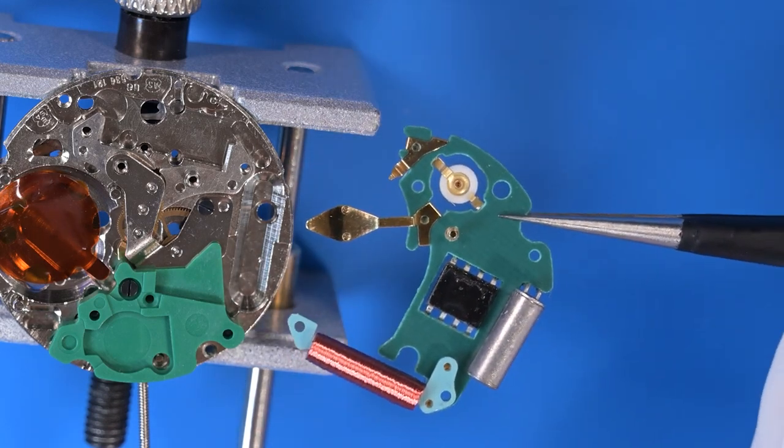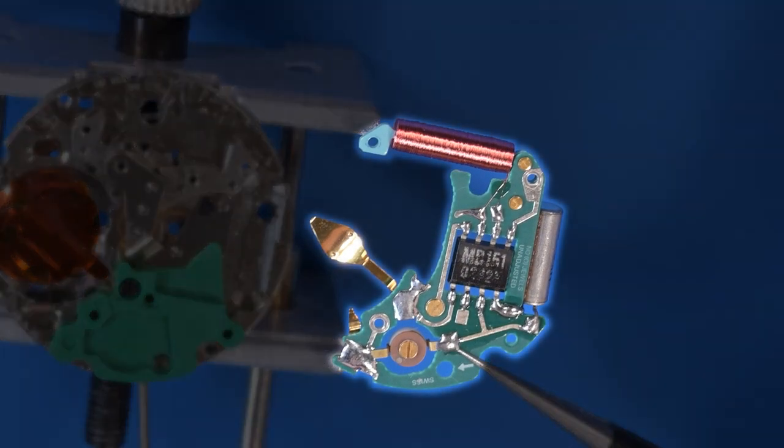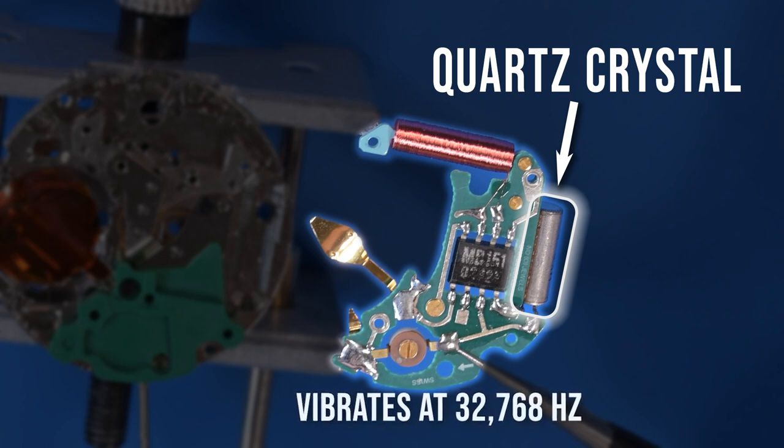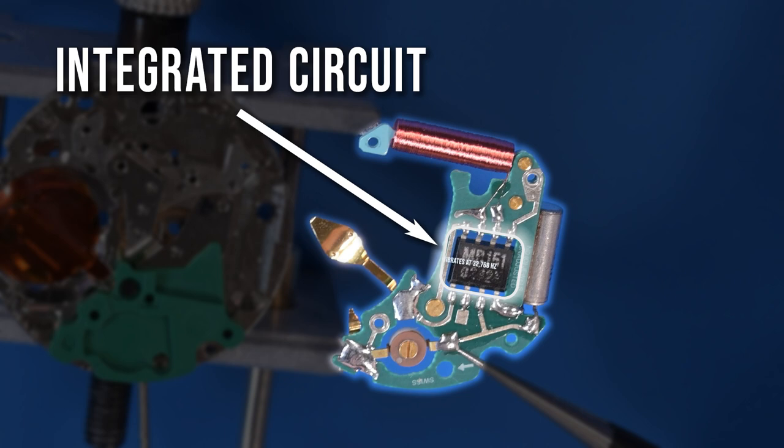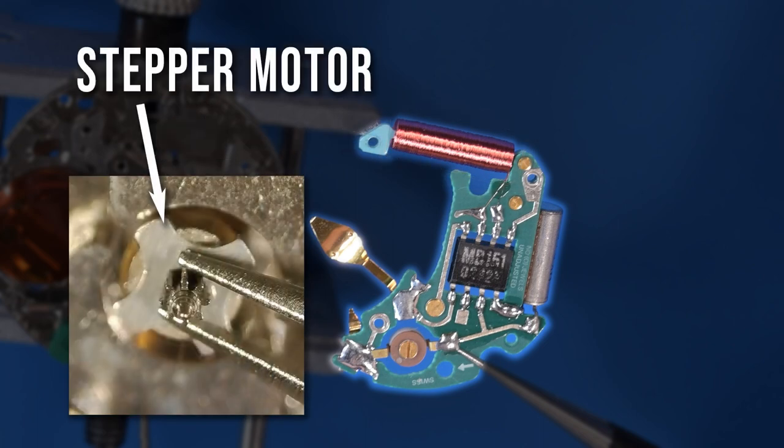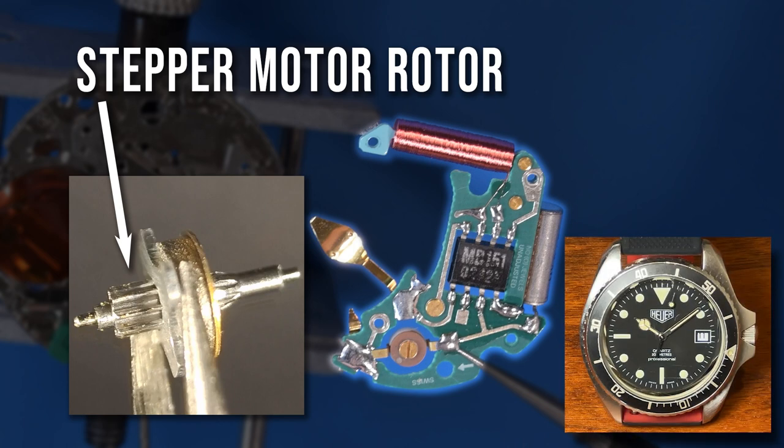With the circuit block separated from the movement we can get a better look at the components and get an idea of how a quartz watch operates. Here's a simplified explanation. The quartz crystal is housed in this metal cylinder. When the power from the battery is applied to it the crystal vibrates at a very predictable rate 32,768 times per second. This integrated circuit chip counts the vibrations and sends a brief burst of power to the coil exactly once per second. The coil energizes electromagnets in the stepper motor alternately switching the poles between north and south which in turn precisely rotates the stepper motor rotor. The rotor has a pinion that directly engages the gears called the train of wheels which moves the hands of the watch.